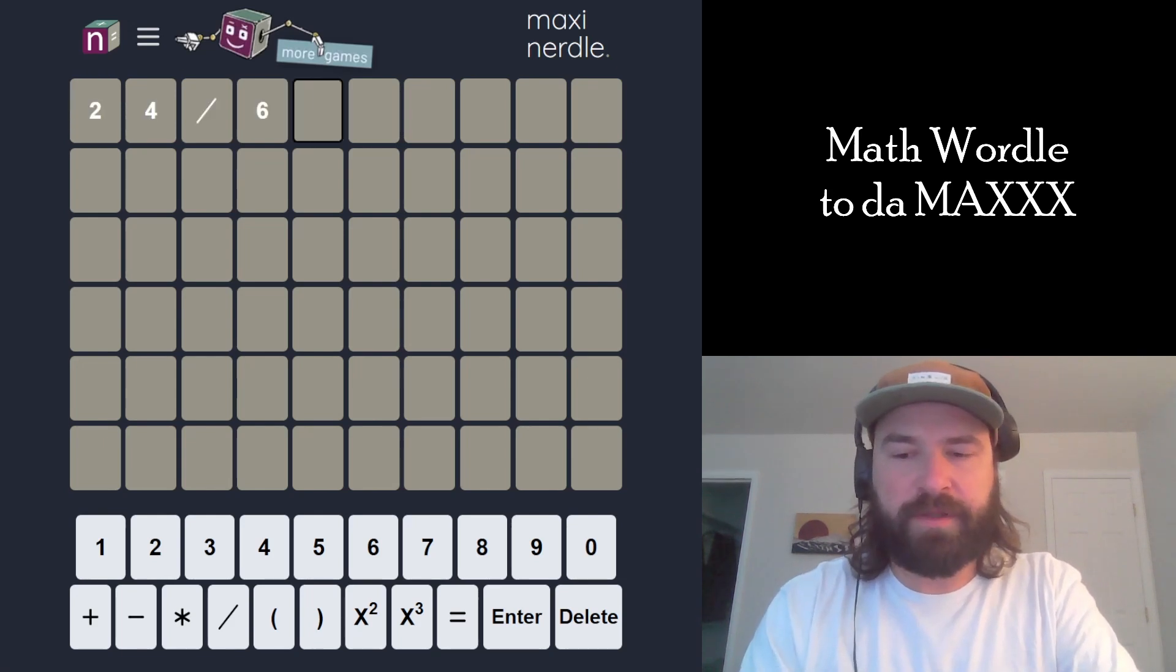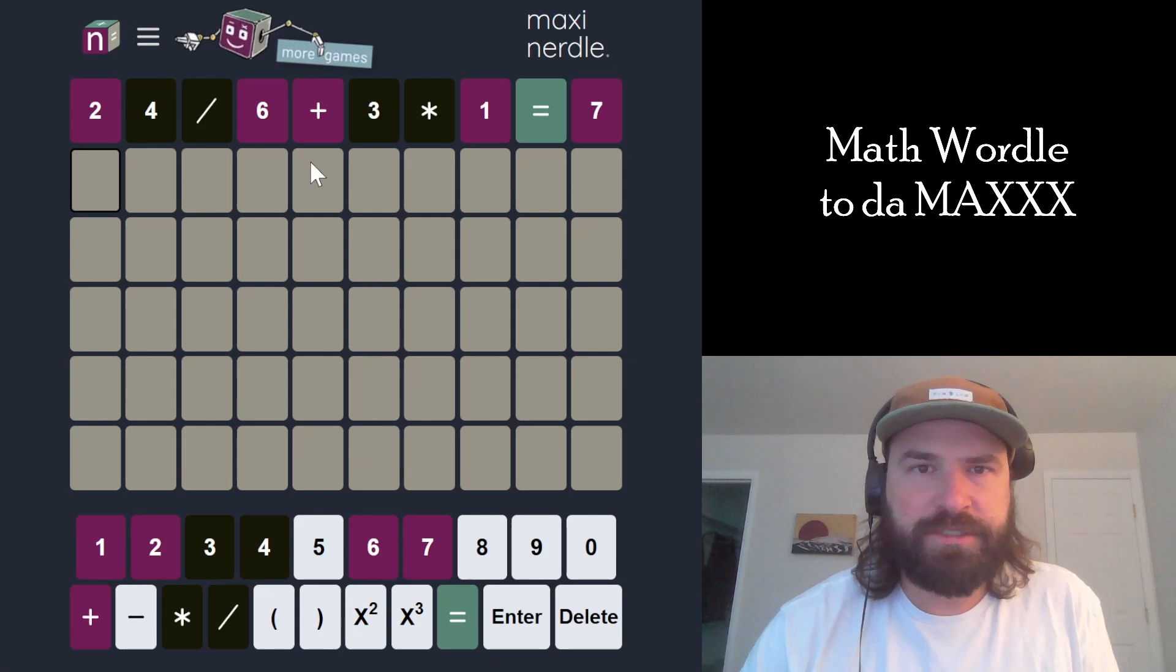Let's match the maxi-nertle. We've got 24 divided by 6 plus 3 times 1 equals 7. It equals a single-digit number.